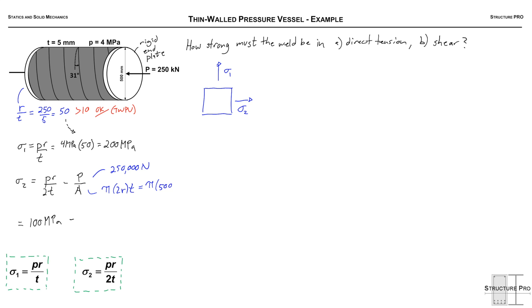So P is 250,000 newtons and A we're going to get this in millimeters squared. The area can be approximated by pi D times T. So pi 2RT and I'm plugging this in as we go. I already solved this. So 100 MPa minus 250,000 over 7,854 is 68.17 MPa. So that's going to be our sigma 2.